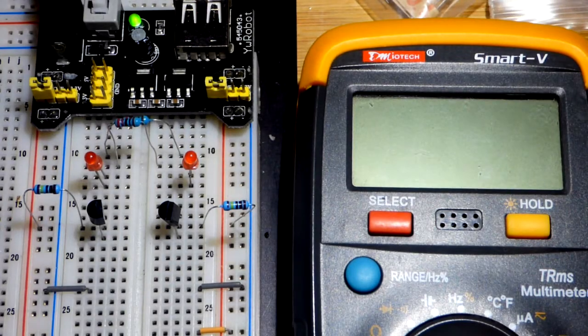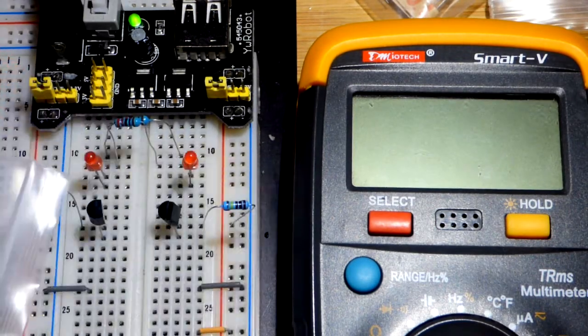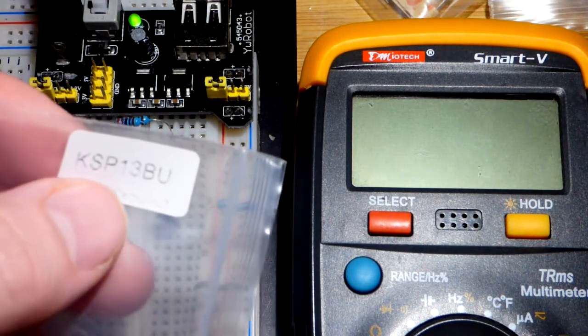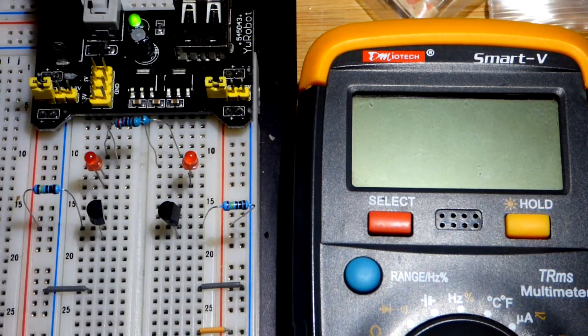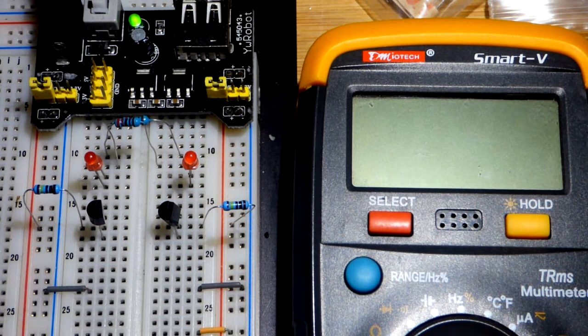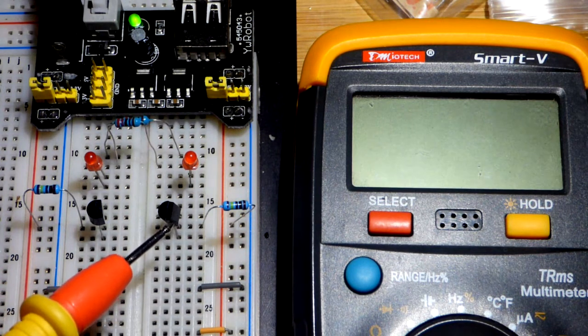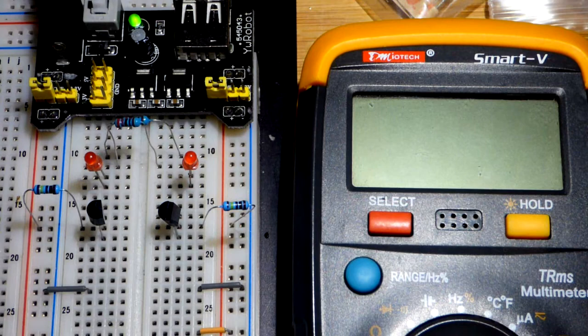So now in this video, we're going to take a quick look at a Darlington pair transistor. This is a KSP-13BU, and so it's going to operate for the most part like a regular NPN bipolar junction transistor.